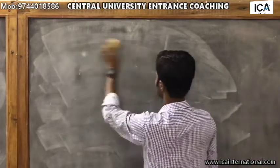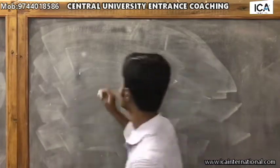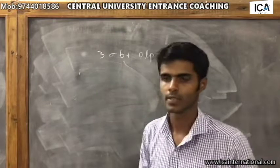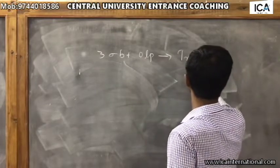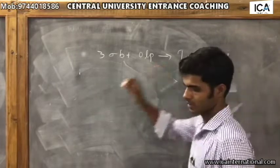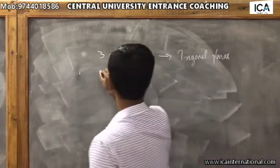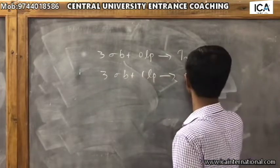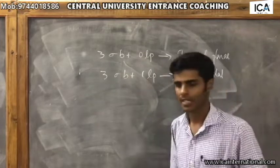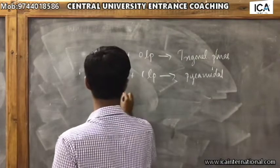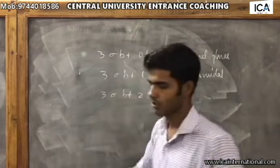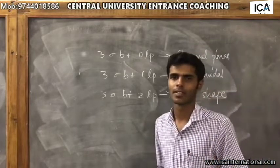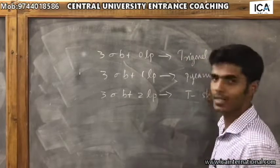Moving on to the three sigma bond category, there are three sub-categories. Three sigma bonds plus zero lone pairs gives a trigonal planar shape. When you have three sigma bonds and one lone pair, you get a pyramidal shape. And when you have three sigma bonds and two lone pairs, you get a T-shape. So in the three sigma bond category there are three different shapes: trigonal planar, pyramidal, and T-shape.